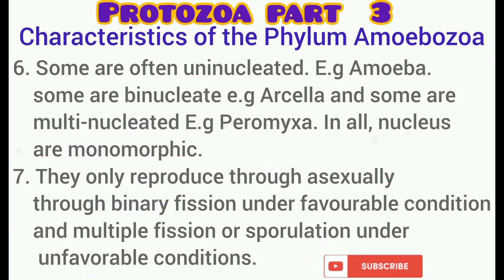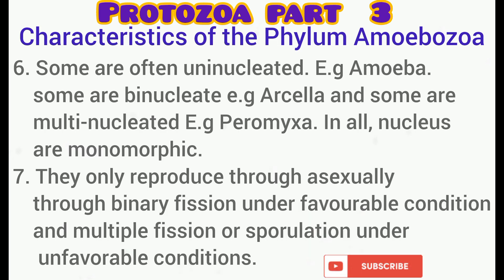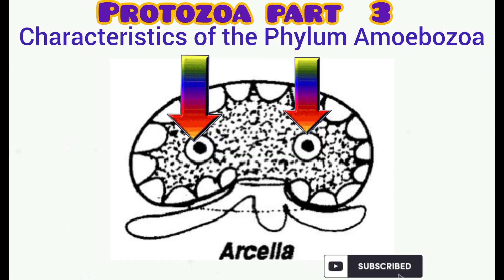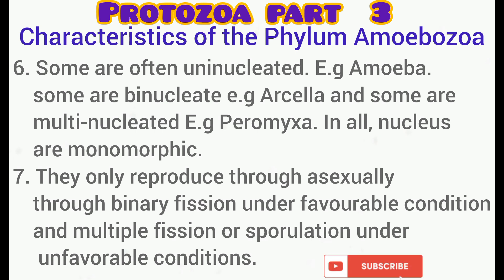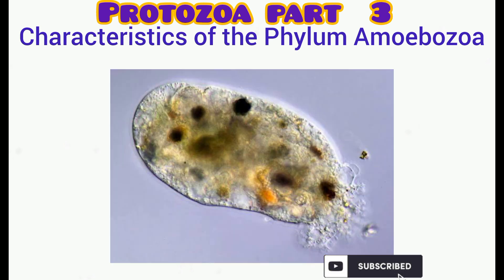Some are uninucleate, meaning they have one nucleus — for example, Amoeba. Some are binucleate, possessing two nuclei — for example, Arcella. Others are multinucleate, possessing numerous nuclei, as seen in Pelomyxa.